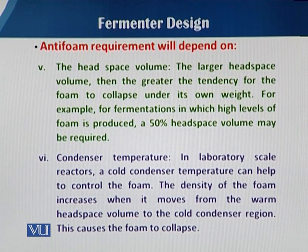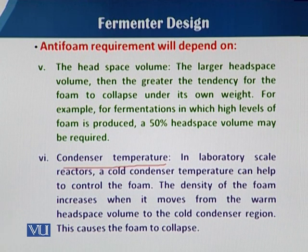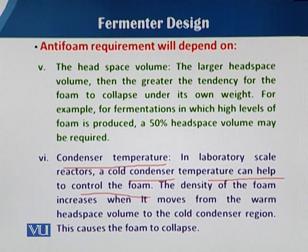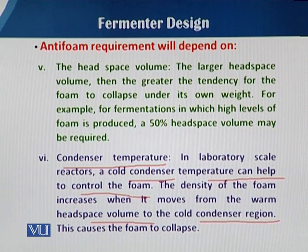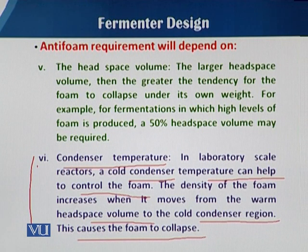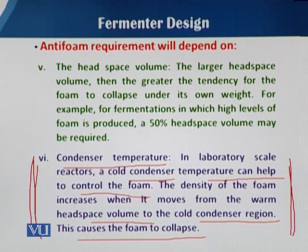Concerning the sixth factor — the condenser temperature — in a laboratory-scale reactor, the cold condenser temperature can help to control the foam. The density of the foam increases when it moves from the warm head space volume to the cold condenser region, which can cause the foam to collapse. By using this condenser temperature strategy, we can have less risk of foam problems.